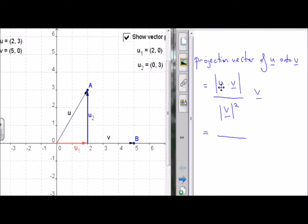So if we work out u dot v, we have 2 times 5 plus 3 times 0, so we end up with 10. The length of vector v will be 5 squared plus 0 squared, which is 25.